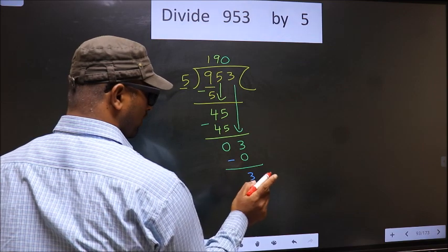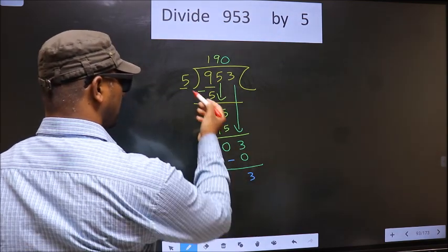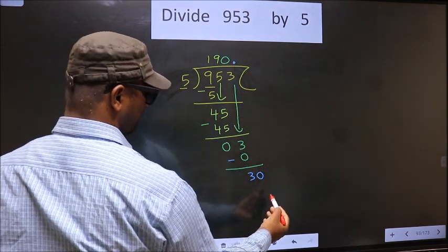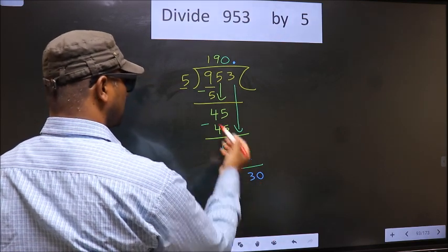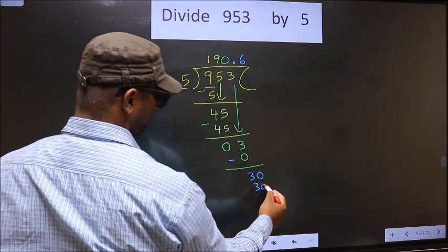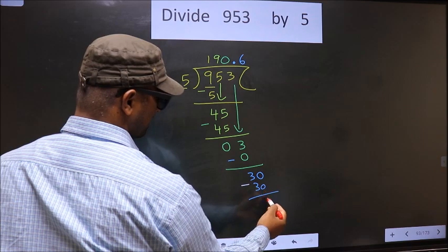Over here we did not bring any number down, and 3 is smaller than 5. So now you can put a dot and take 0. So here we have 30. A number close to 30 in the 5 table is 5, 6, 30. Now you subtract. 30 minus 30 is 0.